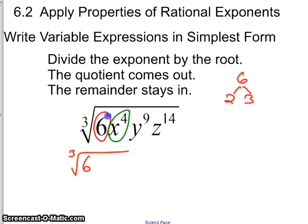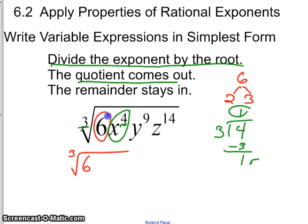Now, x to the power of 4. We're going to divide the exponent by the root. So I've got the power of 4 divided by 3—that's the exponent divided by the root index. If I do 4 divided by 3, I get 1. 1 times 3 is 3, subtract 1, and this is my remainder. So the quotient comes out. This is the quotient. That means that x to the power of 1 comes out. The remainder stays in. Here's your remainder. So that means x to the power of 1 stays in.